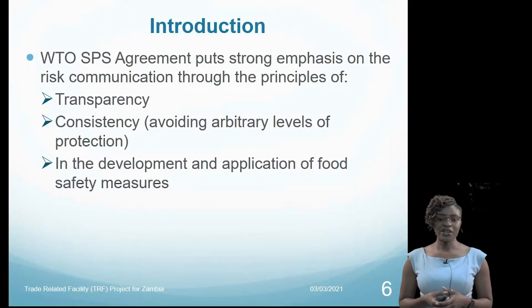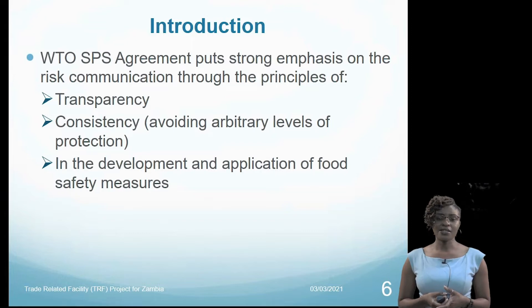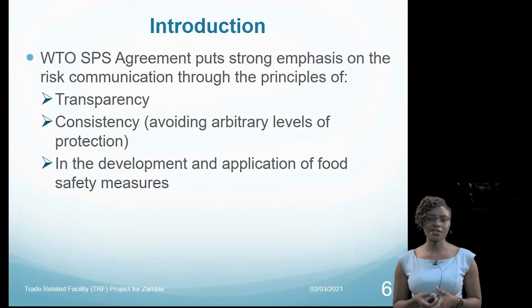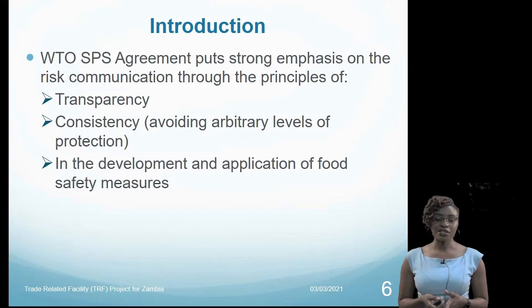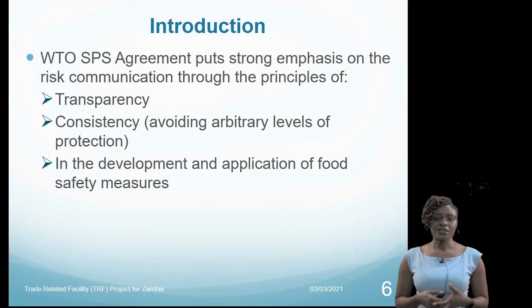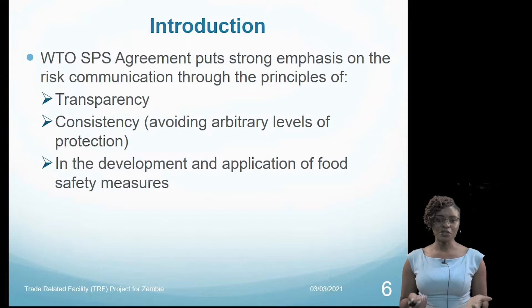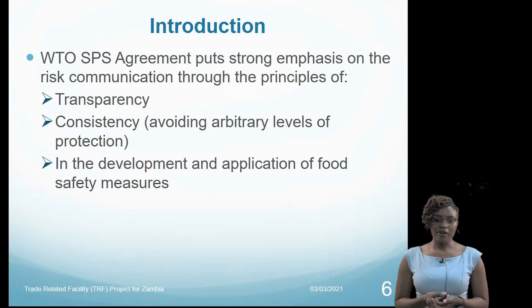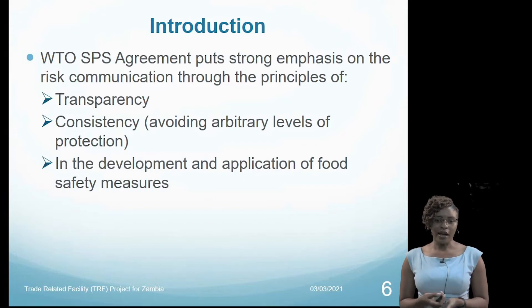From our previous lessons on the WTO SPS agreement and the TBT agreements, we've seen that they put strong emphasis on risk communication. This is reflected in the principles of transparency and consistency and in how we develop and apply food safety controls. The SPS agreement says that when you are coming up with food safety measures, it needs to be transparent — you need to document, inform interested parties, and have a consistent method so that the levels of protection you are putting in place are not arbitrary. All of that is risk communication.